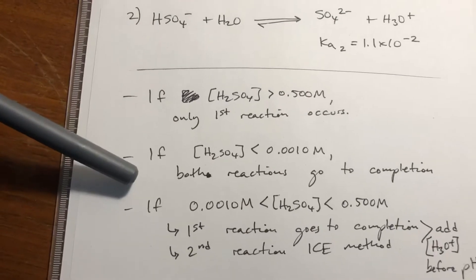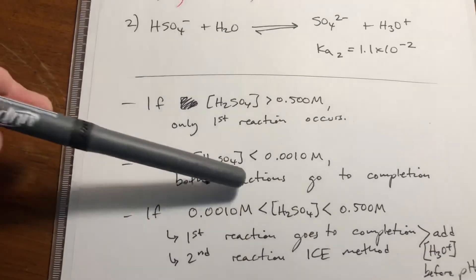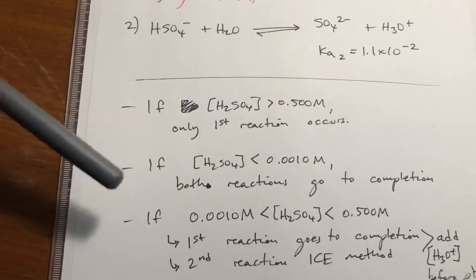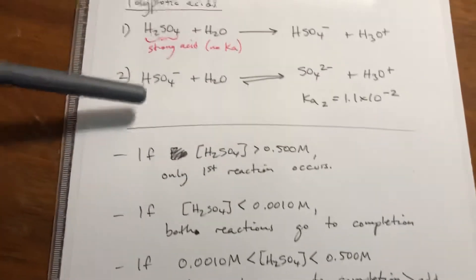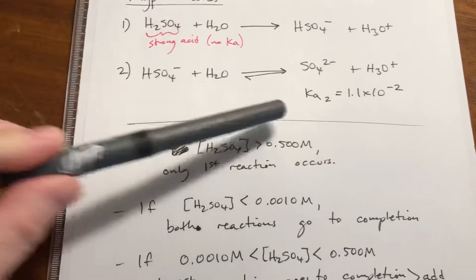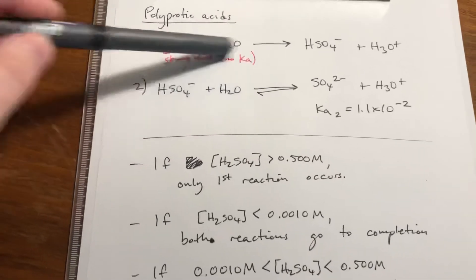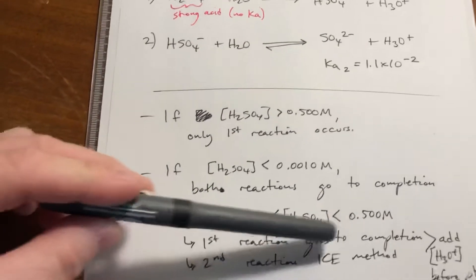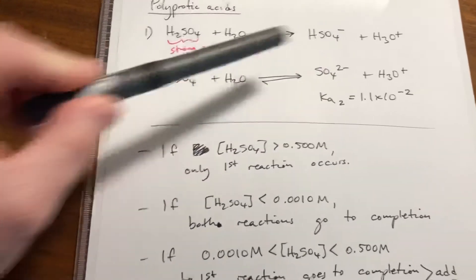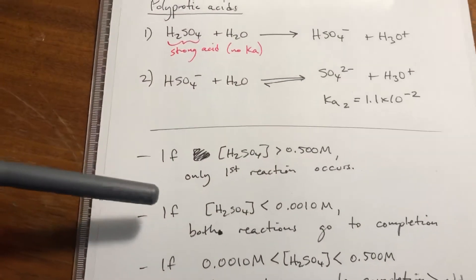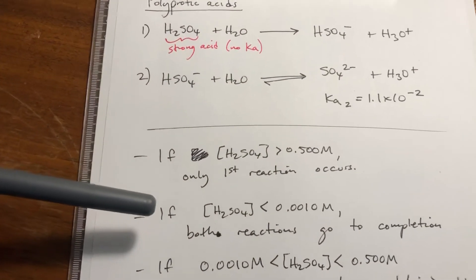If your concentration is below 0.001, which is a pretty low concentration, it turns out that both reactions just go to completion, and you can ignore Ka. So whatever the concentration is, you double that and take the negative log of it, because you'll get two equivalents of H3O+ along the way. Not too bad.